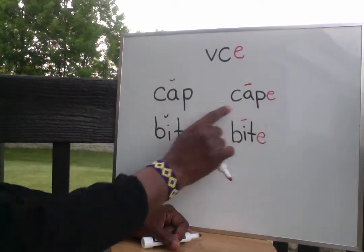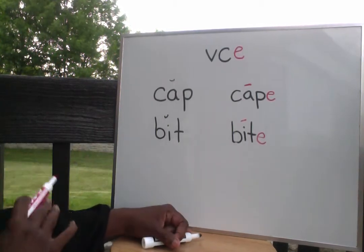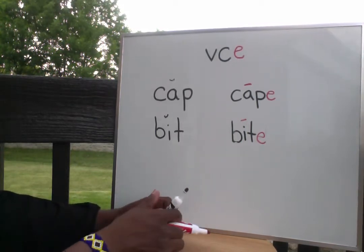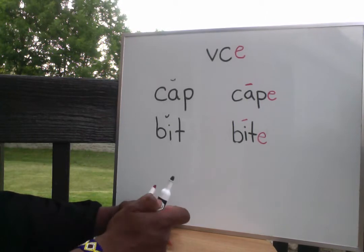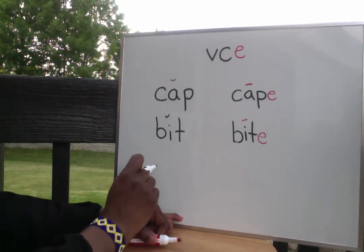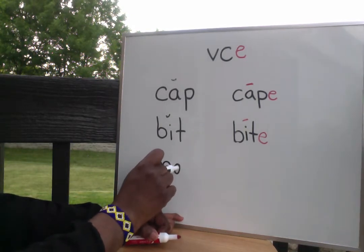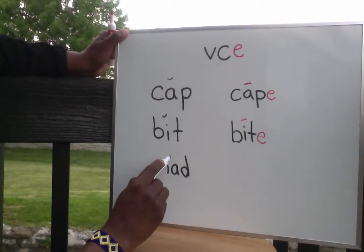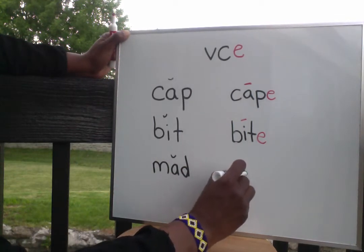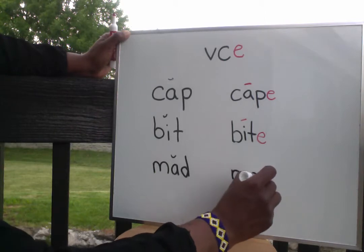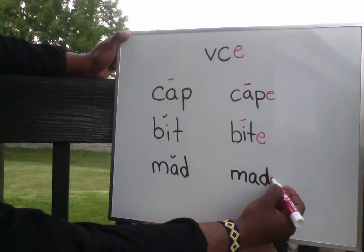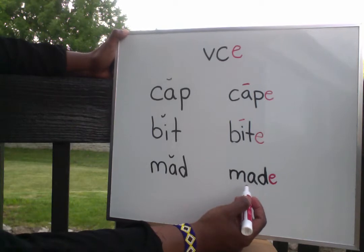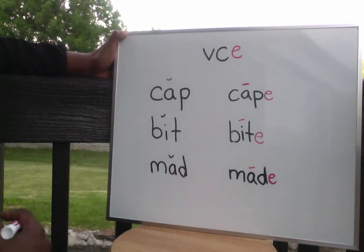So it changes from bit with an E at the end to bite. Cap, cape, bit, bite. Let's do another one. M, A, D — mad. Short vowel sound. But now I'm going to add an E, and this E is making my vowel sound change to a long vowel sound, and now it is saying A — made.